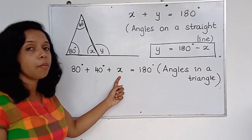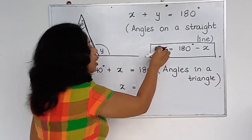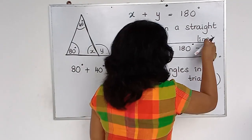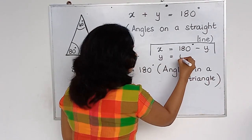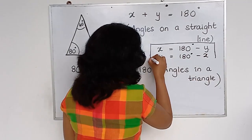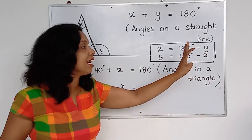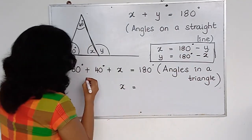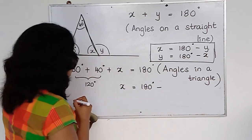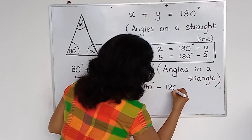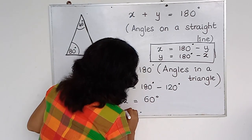Now I want to find x from this formula. Keeping x alone: 80 plus 40 is 120, so x equals 180 minus 120, which gives x equals 60 degrees.